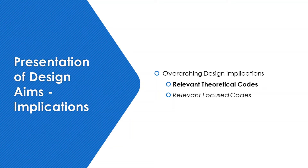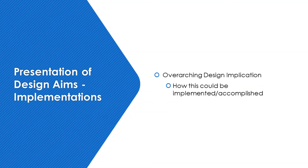For each design aim, we will first present the overarching design implications we derived from the aim and the relevant theoretical and focus codes that led to these conclusions, shown in bold and italics respectively. Then, for each design implication, we discuss how it could potentially be implemented or accomplished in the design of the proposed tool.